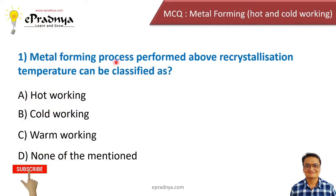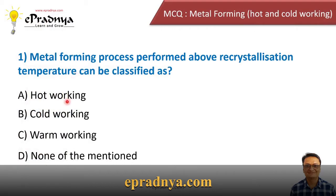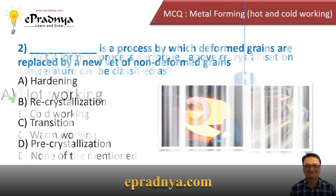First MCQ: Metal forming process performed above recrystallization temperature can be classified as — hot working, cold working, warm working, or none of these. The correct answer is hot working. The metal forming process can be classified into two categories based on the temperature of a material. If we heat the material above the recrystallization temperature, that process is called hot working. If we change the shape of a material at room temperature, that is called cold working.